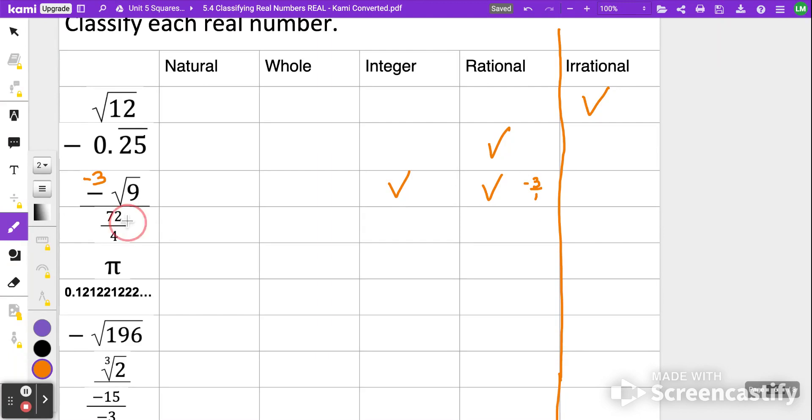72 over 4, if we divide that, 4 will go into 72 18 times. So 18 is a natural number, which means it's also a whole number, which means it's an integer, which also means it's rational. The next one we have is pi. Pi is not repeating. It does not end, so we're going to call pi an irrational number.